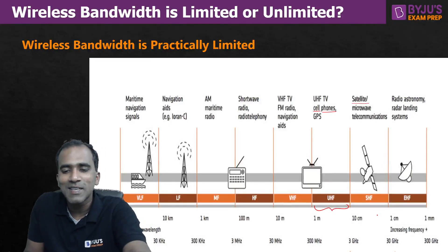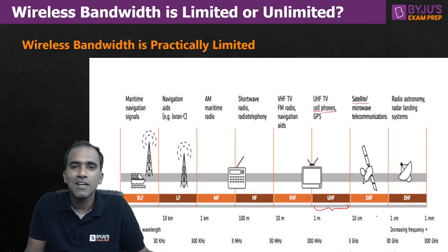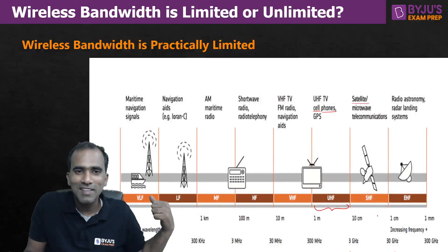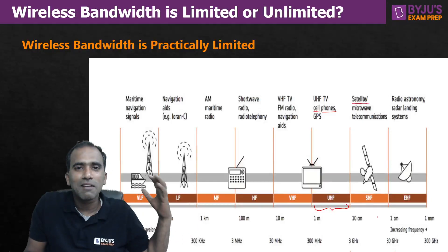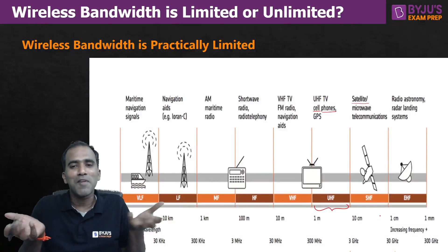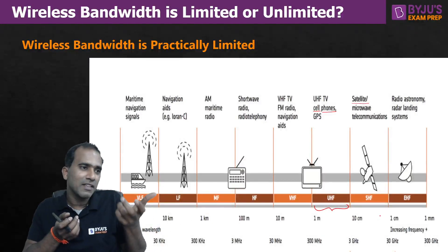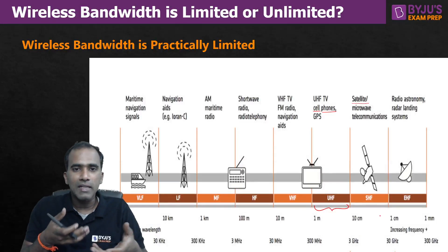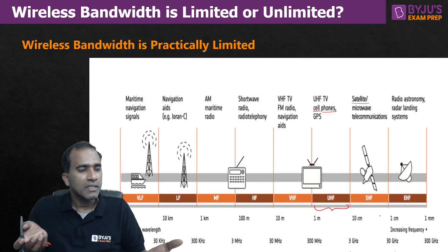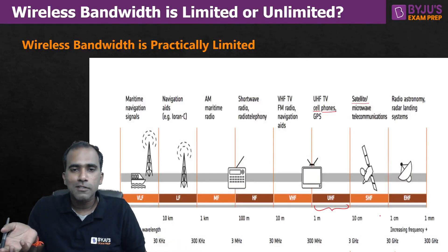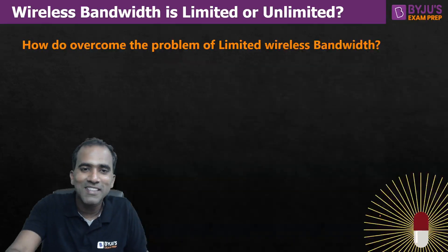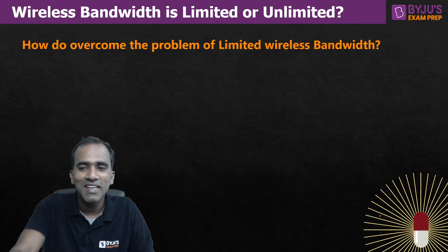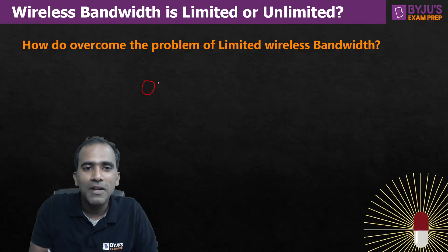With only 30 GHz of wireless bandwidth, you can imagine how many mobile phones can communicate and how low our download speeds would be when shared among crores of people. So wireless bandwidth is practically limited. But how are we still able to download data — every person with a mobile phone downloading at around 10–20 Mbps? The answer is optical fiber communication.